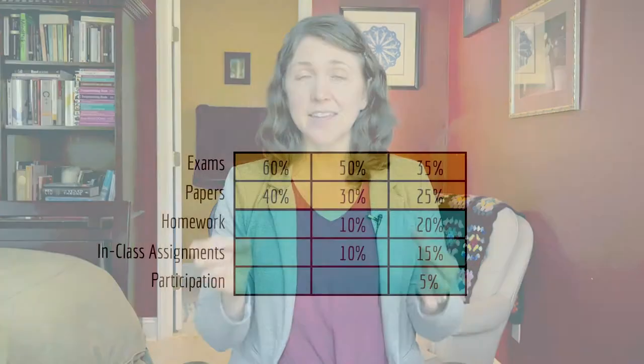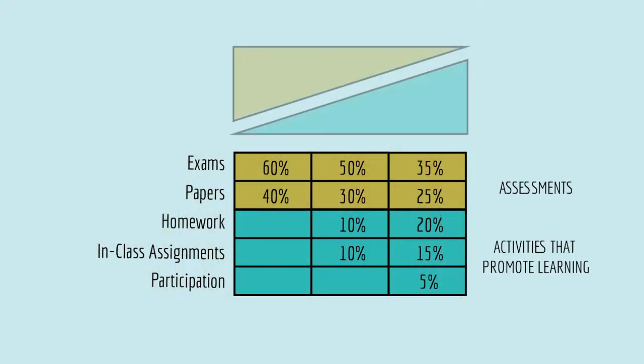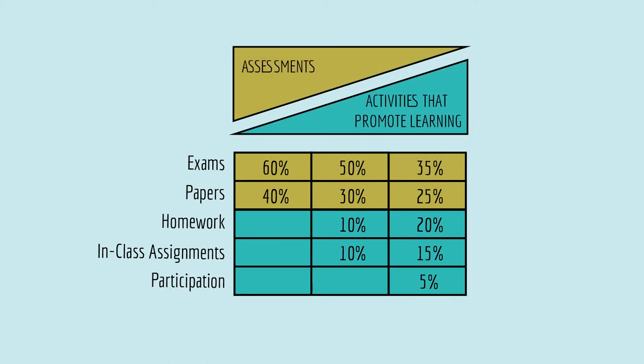Here are some things to consider if you want to implement multiple grading schemes. Your categories will differ from mine, but the key is to separate them into activities that promote learning and assessments, then create grading schemes on a scale that weights those two types of categories differently. Don't offer grading schemes you don't feel good about on their own — for example, I wouldn't feel good about a policy where 80% of the grade is based on completion of homework. Assessments need to be a significant portion of the final course grade, so make sure each grading scheme is consistent with your pedagogical values.